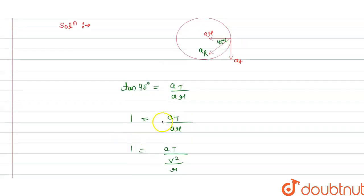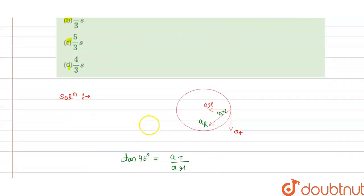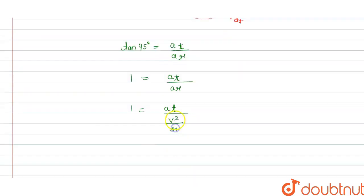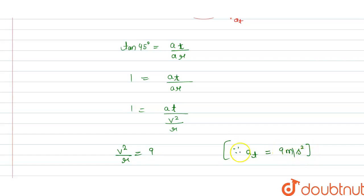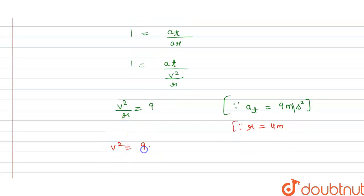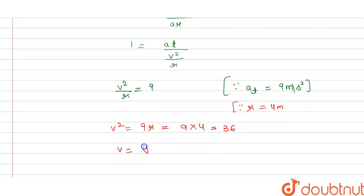So we can write: tangential acceleration at = 9 m/s². Setting at = ar gives v²/r = 9. With radius r = 4 meters, we get v² = 9 × 4 = 36. Applying square root to both sides, velocity v = 6 meters per second.